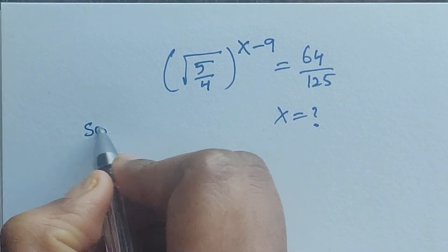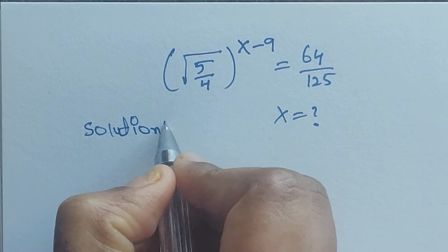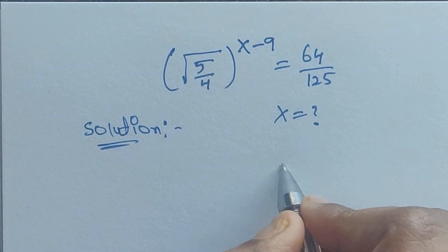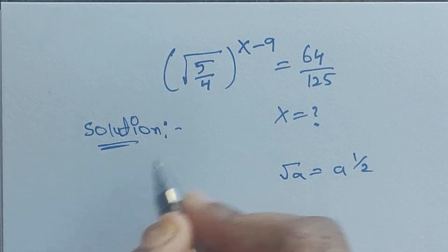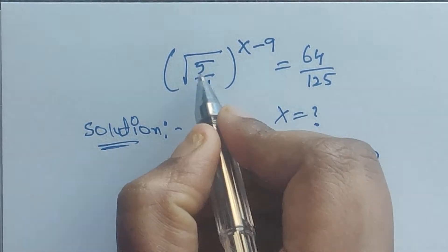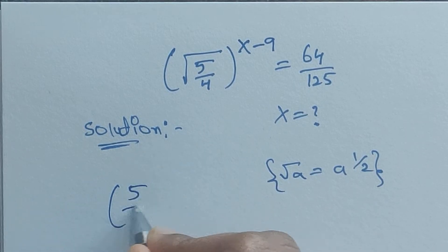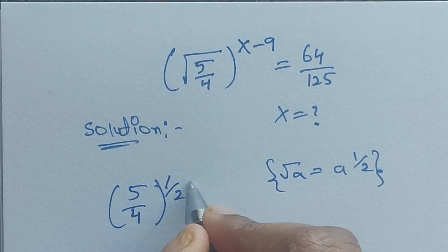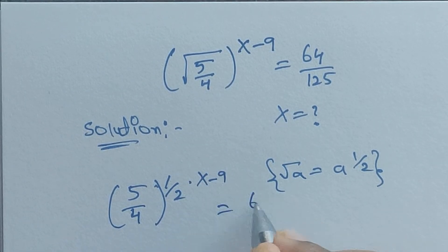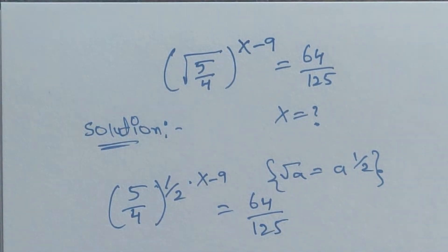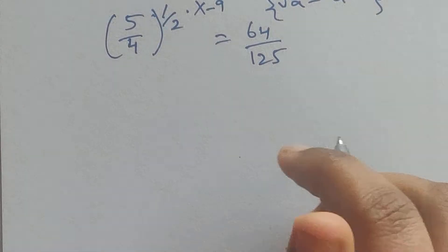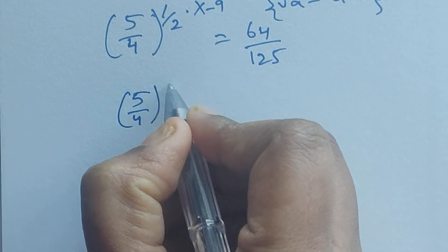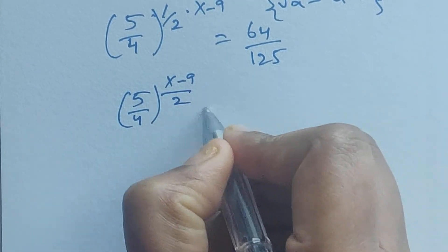In this problem, we use the formula: square root of a equals a to the power of 1/2. I am using this formula here. So (5/4) to the power of (1/2) times (x minus 9) equals 64 divided by 125. So now (5/4) to the power of (x minus 9) divided by 2 equals 64 divided by 125.